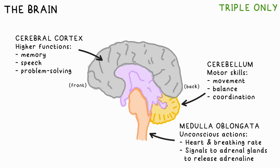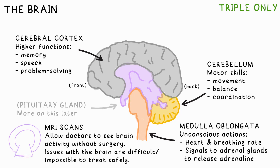It's also what controls the release of adrenaline. MRI scans — that's magnetic resonance imaging — are a way of seeing the activity in your brain safely. If something goes wrong with your brain though, it can be very difficult to treat without damaging important parts of it.